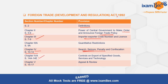Chapter 4A covers Sections 14A to 14E and is basically related to the control on export of goods, services, and technologies — there are some specific aspects covered in this chapter. Lastly, Chapter 5, covering Sections 15 to 17, deals with appeal and review-related provisions with the authorities.